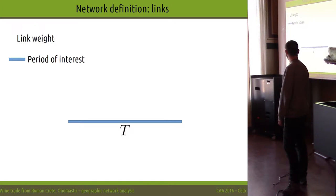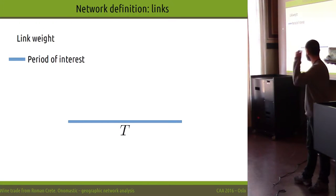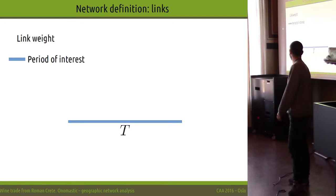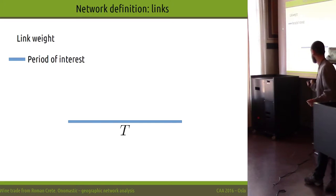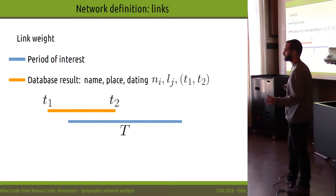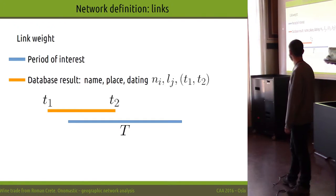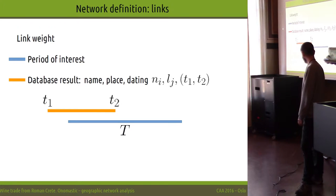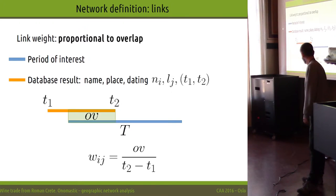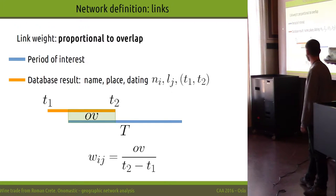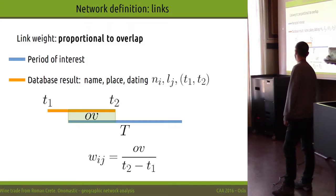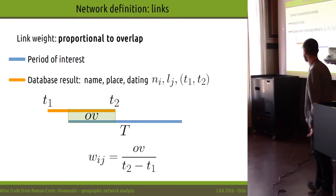I'll explain how we assign weights to the links. We have a period of interest, and query results with certain dating. For the name I appearing in location J, the weight for this particular link is calculated as the overlap between these two time intervals, penalized by the width of the dating range in the database. So if the dating is fully contained within the period of interest, the weight would be one.